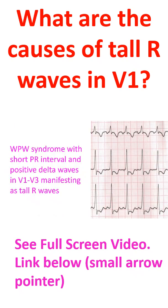The conventional true posterior wall myocardial infarction and lateral wall infarction can cause tall r in V1, which is equivalent to deep Q waves in posterior leads seen as a mirror image in anterior leads.